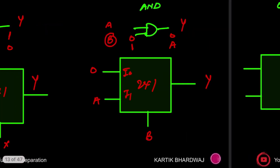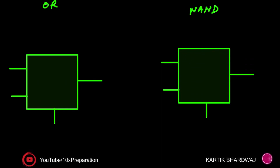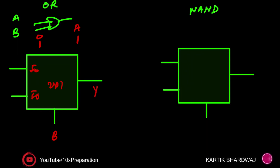Now for the OR gate: again two inputs a and b, with b as the select line on the 2x1 MUX. When b is zero, output is a — because a OR zero equals a. When b is one, output is one — because a OR one equals one. So I0 is a and I1 is one, giving you the OR gate at the output y.